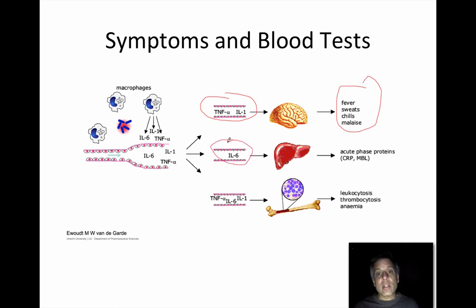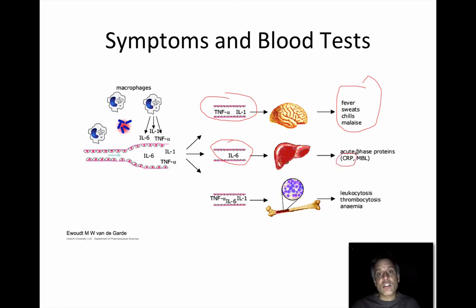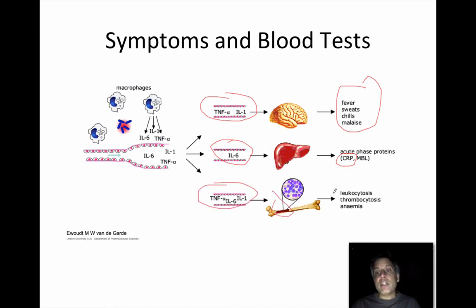Interleukin-6 actually stimulates the liver to produce what are called acute phase reactants or proteins, and a very common one is C-reactive protein, which we sometimes measure in your blood. So if you've got elevated levels of the IL-6 cytokine, the C-reactive protein levels will go up as well. These cytokines can also have an effect on our bone marrow, translated as abnormalities on your blood count test — elevated white count, platelets, or low blood counts, which is also known as anemia.